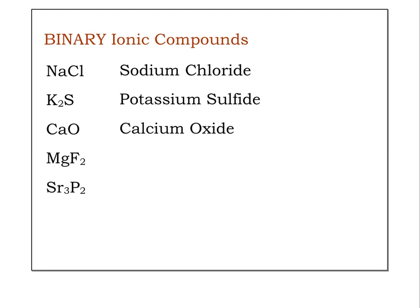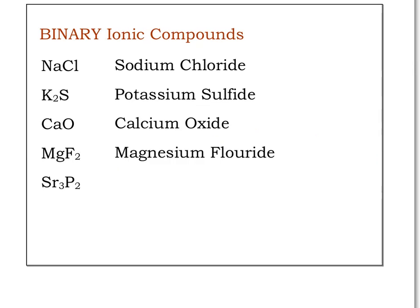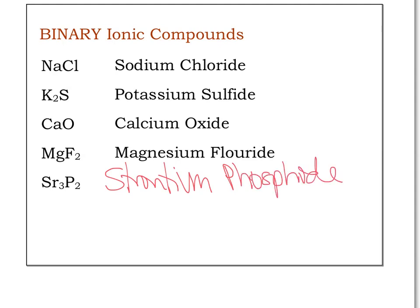Next we have Mg. Be careful not to confuse Mg with Mn — pay attention to your periodic table. Mg is magnesium, so we write magnesium. The second element is fluorine, and we change it to fluoride. Lastly, Sr is strontium — named first as is. The anion is phosphorus, but phosphoride sounds funny, so instead we say phosphide.